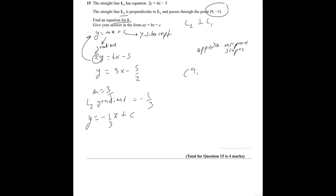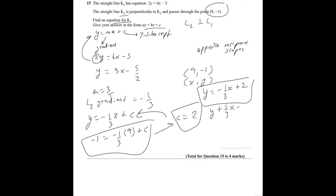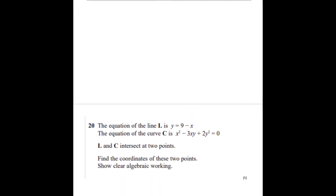Using y equals negative 1/3 x plus c with the point (9, -1): negative 1 equals negative 1/3 times 9 plus c. Solving gives c equals 2. So y equals negative 1/3 x plus 2. Rearranging, the final answer is y plus 1/3 x equals 2. That's a fairly simple question using opposite reciprocal slopes and the equation y equals mx plus c.